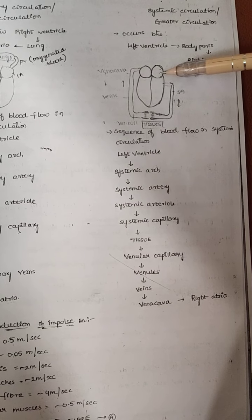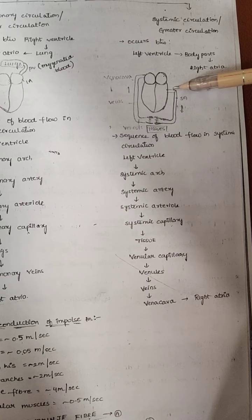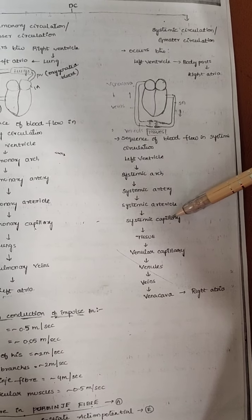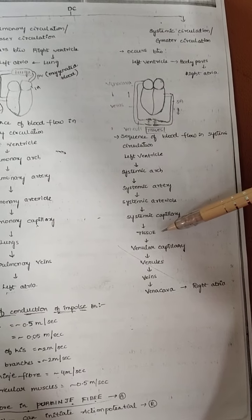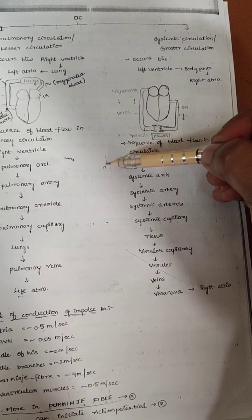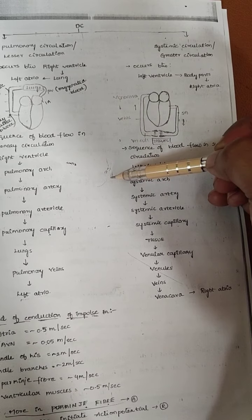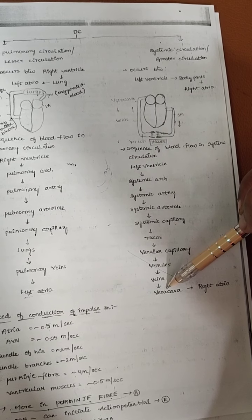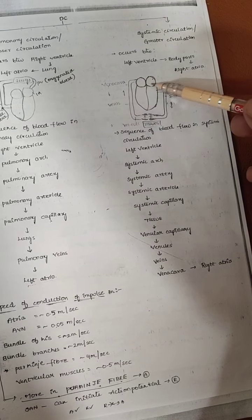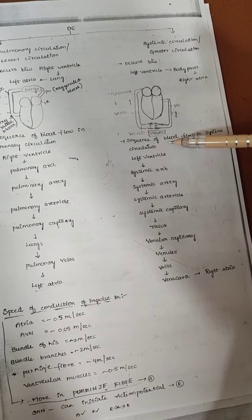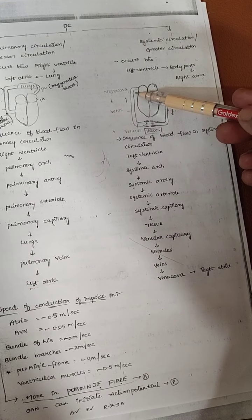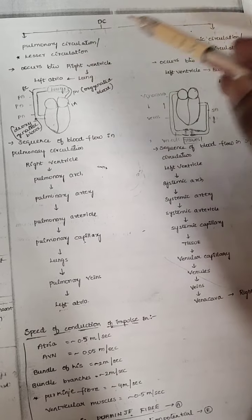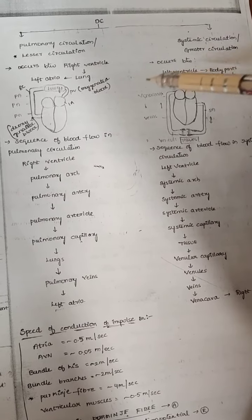In systemic circulation, blood enters from the left atria to the left ventricle. There is a systemic arch, systemic arteries, arterioles, and capillaries. Through the capillaries, oxygenated blood enters into the tissues. Then it is connected with venular capillaries to venules, venules to vena cava, either superior vena cava or inferior vena cava, then again opens into the right atria. This whole circulation is called systemic circulation.